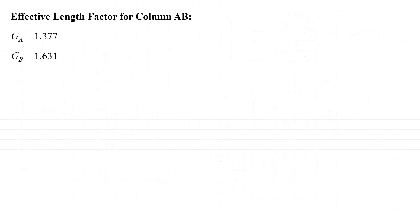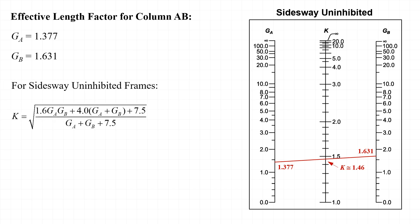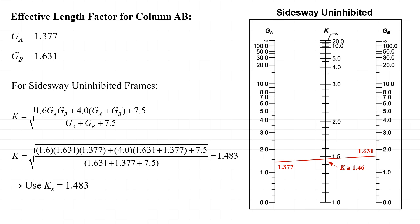Now that we know that G sub A and G sub B are 1.377 and 1.631 respectively, we can now determine the effective length factor for column AB. First, I'll use the alignment chart by drawing a straight line from 1.377 on one side to 1.631 on the other side. Then we can see that K is approximately equal to 1.4 or 1.5 based on where that line crosses the center axis. Alternatively, we can use the equation to calculate K and in this case find that K is equal to 1.483. I'll use K equal to 1.483 later on in this example when I calculate the strength of this column.